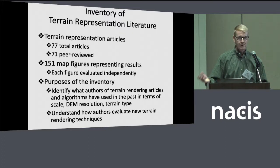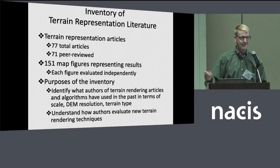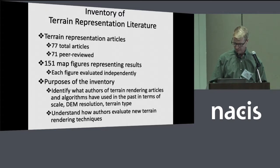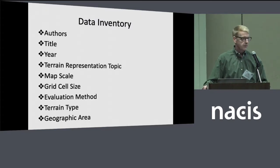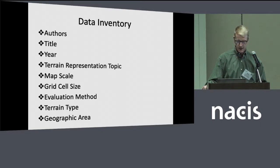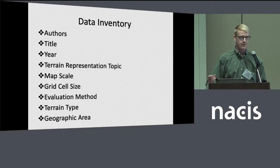We also wanted to understand how authors evaluated their results once they had them. Were they just looking at the output and saying 'this looks good to me,' or was there a more rigorous process involved? So these are the categories we looked at as we went through the inventory of those 151 figures. We do have results to show from this inventory, and I'll go through them as a series of graphs and talk about how this influences what we want our standard elevation model to look like.